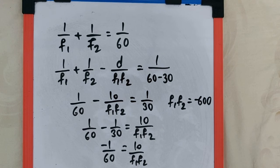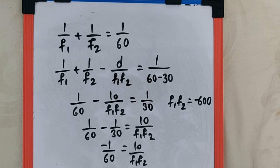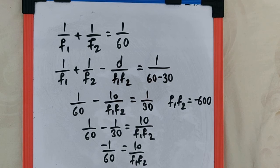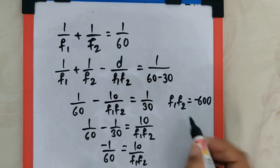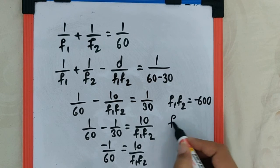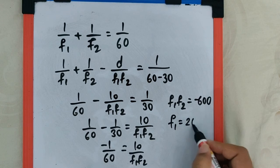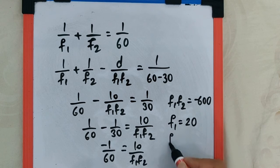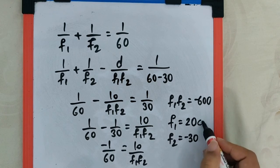Now, out of the given options, the only one that gives a product of −600 is f1 = 20 and f2 = −30.